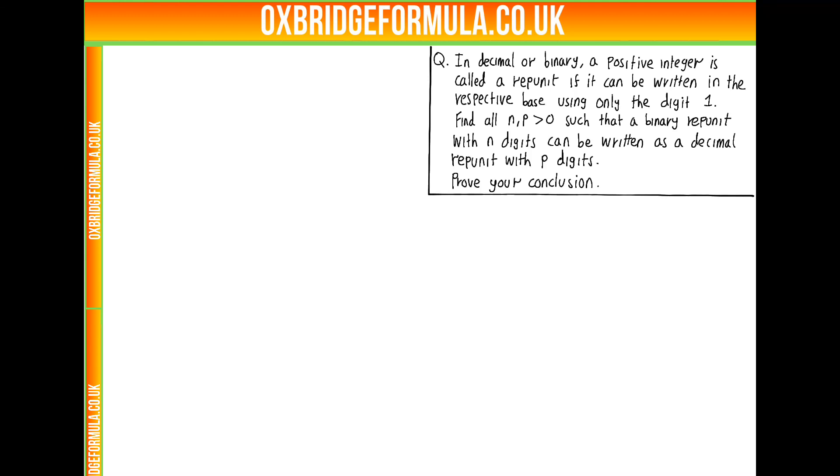The first thing to do in this question is to get a better understanding of what a repunit in binary means. So something being a repunit in binary means if we wrote it out in base 2, we would just get a string of 1s. But that is equivalent to being 1 less than a power of 2. So we know our binary repunits are in the form 2 to the n minus 1 for some n.